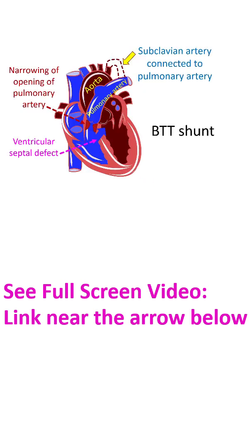The Blalock-Thomas-Taussig shunt, known in short as BTT shunt, creates a connection between a branch of the aorta and a branch of the pulmonary artery. Blood in the aorta at high pressure flows into the pulmonary artery at lower pressure.